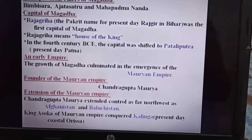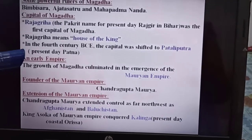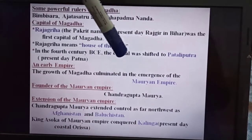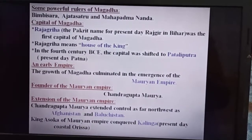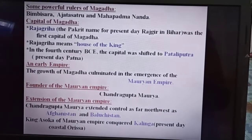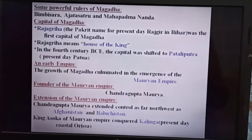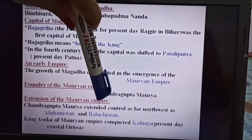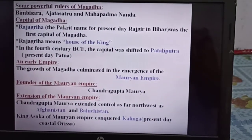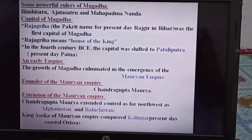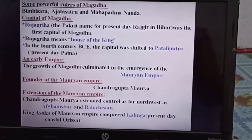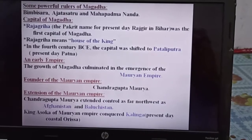The next important point is the early empire. The growth of Magadha culminated in the emergence of the Mauryan Empire. The founder of the Mauryan Empire was Chandragupta Maurya. He extended control as far northwest as Afghanistan and Balochistan. King Ashoka of the Mauryan Empire conquered Kalinga, which is present-day coastal Odisha.